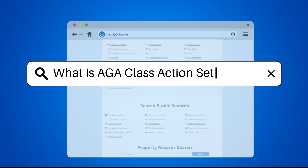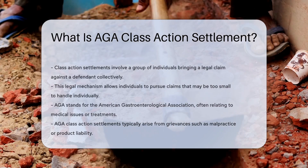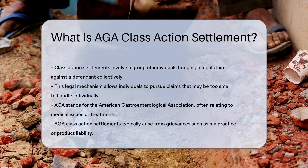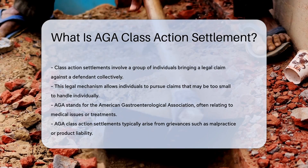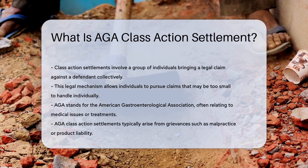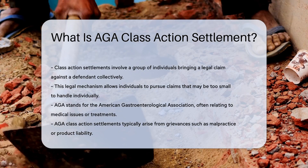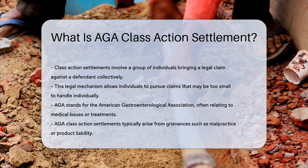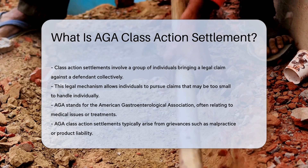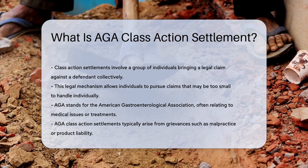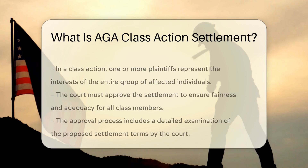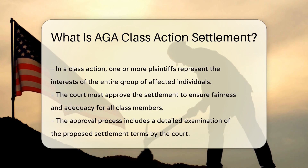What is AGA class action settlement? Class action settlements occur when a group of individuals collectively brings a legal claim against a defendant. This process allows individuals to pursue claims that may be too small to tackle alone. AGA stands for the American Gastroenterological Association. In legal terms, an AGA class action settlement typically involves claims related to medical issues or treatments.